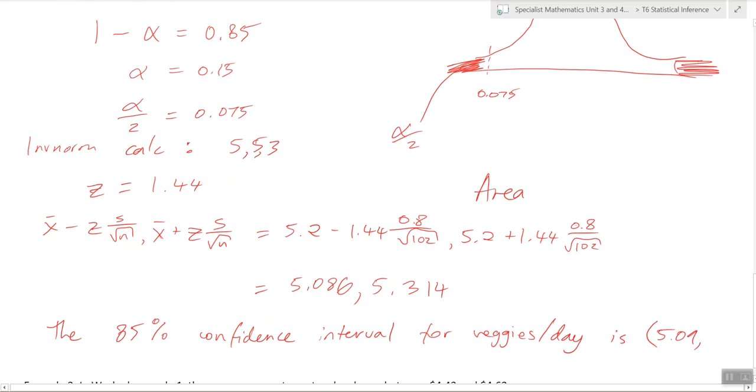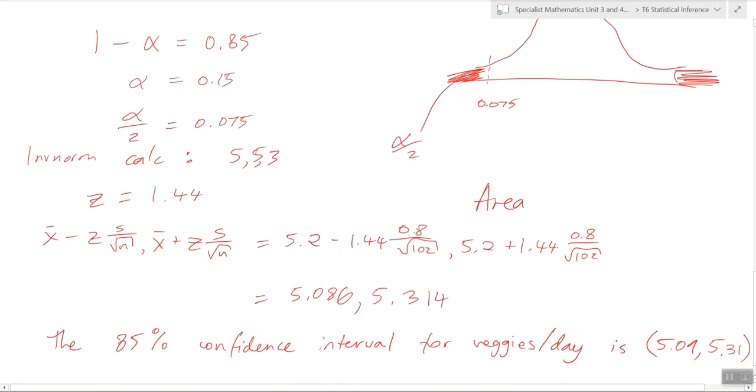So, have a careful look at my statement. So, the 85% confidence interval for veggies per day is, and see how I've used a different notation, I suppose, this time. I put the confidence interval in brackets. So, just be aware of that.